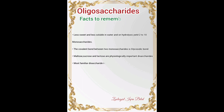Oligosaccharides are less sweet and less soluble in water. On hydrolysis they yield two to ten monosaccharides — disaccharides, trisaccharides, tetrasaccharides, and so on. The covalent bond between two monosaccharides is a glycosidic bond.